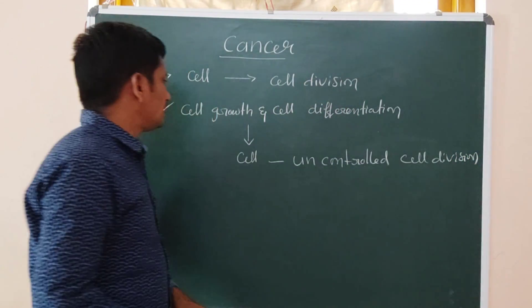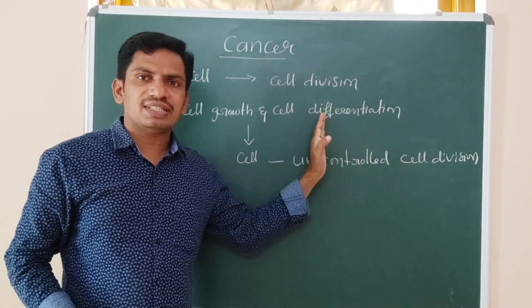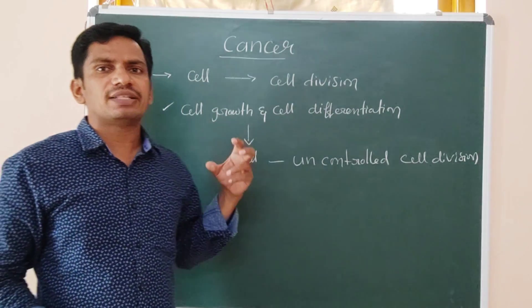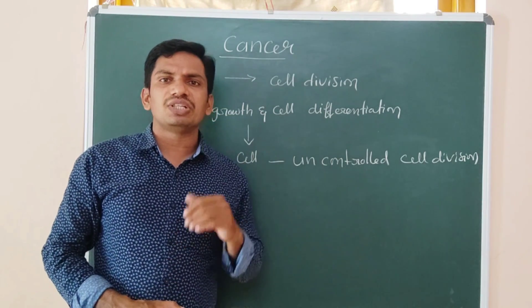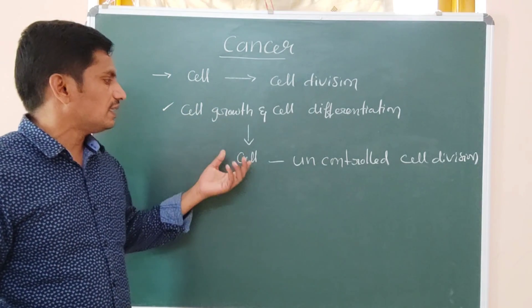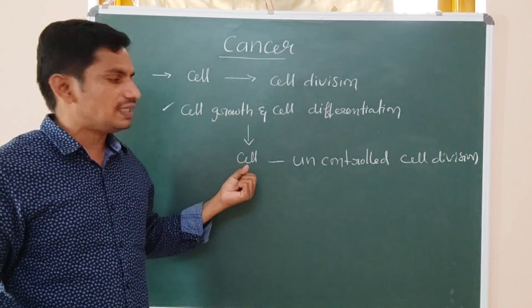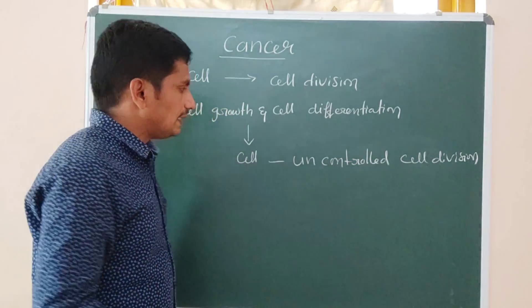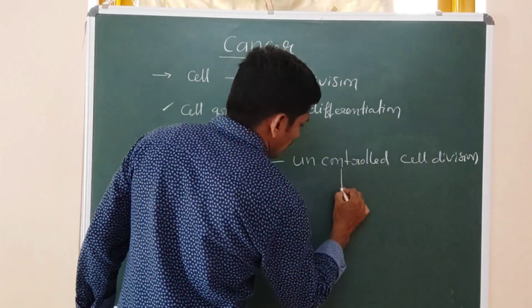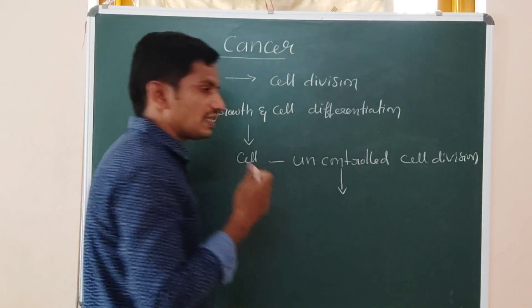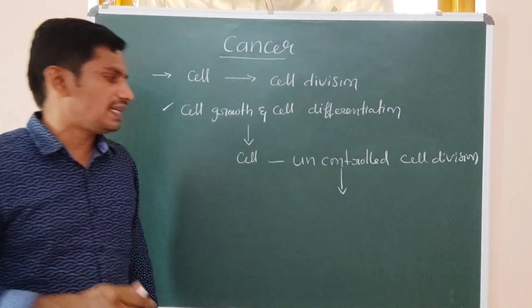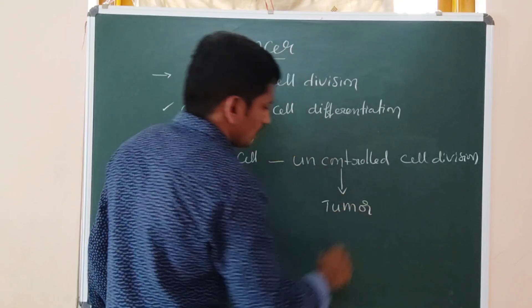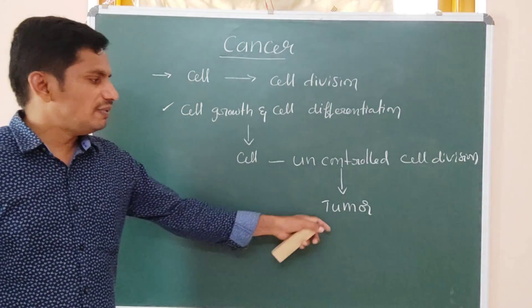Cell growth and cell differentiation normally occur in a regulatory manner. But in some cases, because of some carcinogenic agents, the cell loses its ability and undergoes uncontrolled cell division. This leads to numerous cells being formed as a tumor.